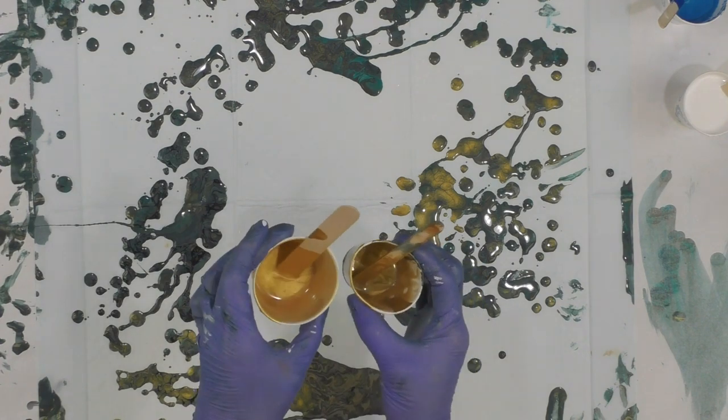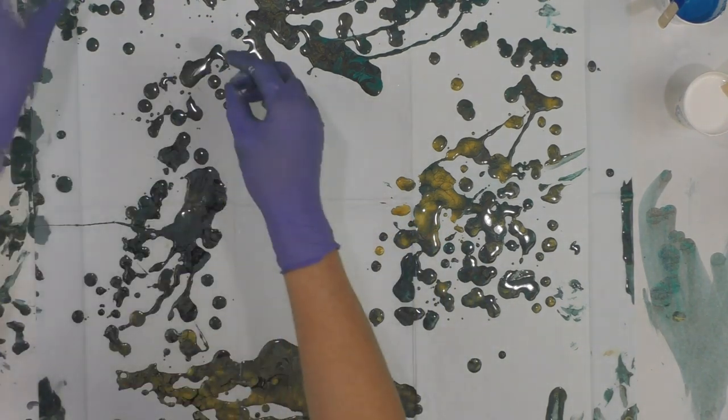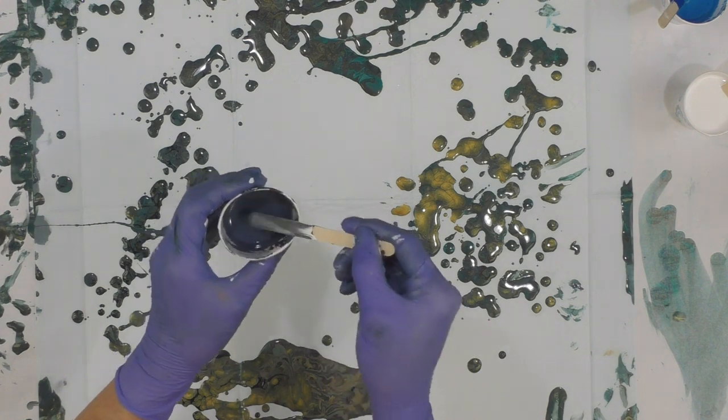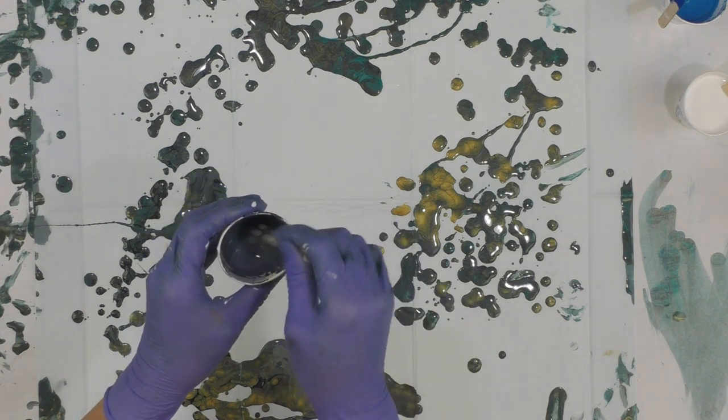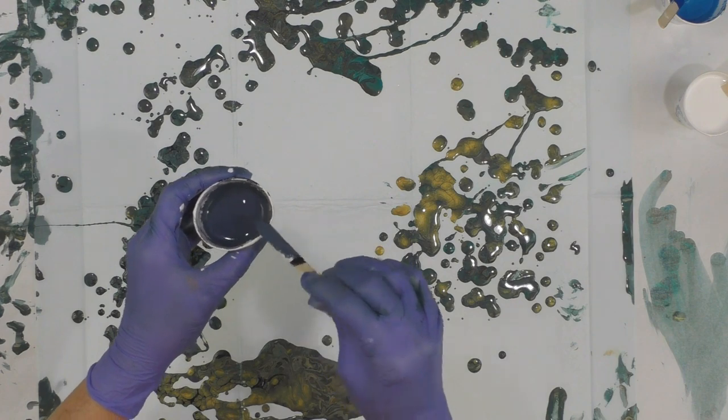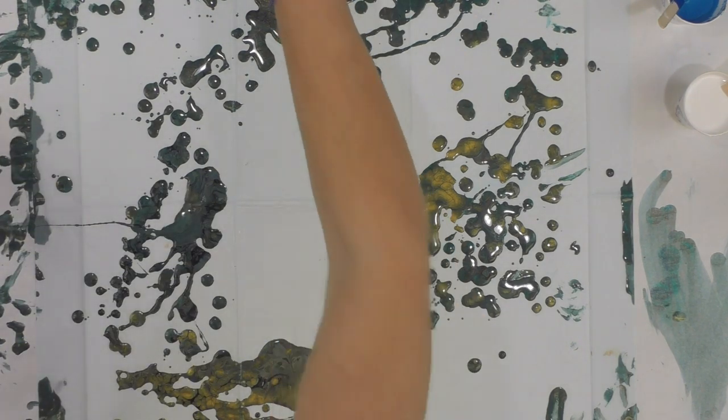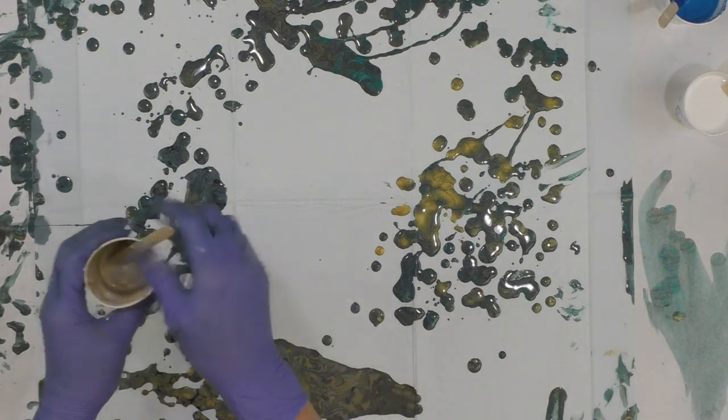I've got my golds in these cups, and then what I did is I went through and added just a little, maybe like a teaspoon or less, of DecoArt white satin enamel into the colors.